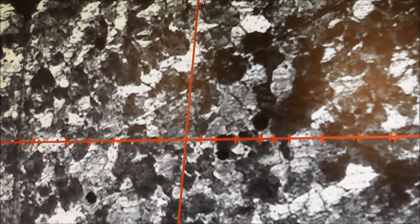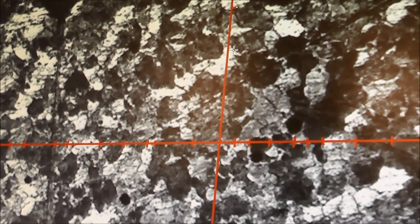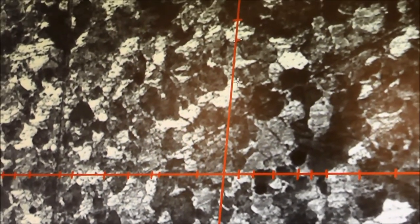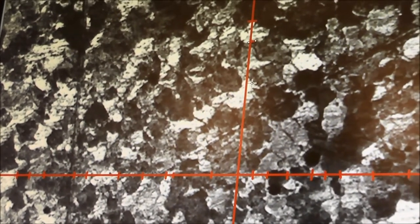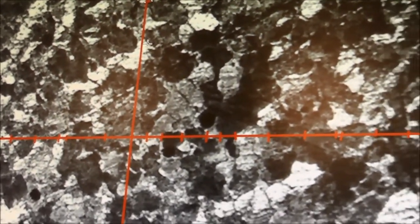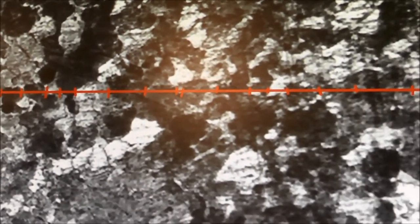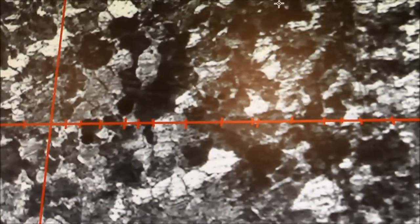So grain boundaries are wherever you cross a grain that is white to gray or gray to black or white to black, right? And also, look at the geometry. Sometimes the geometry can tell you if you're crossing a grain, but there might not be a color change or shade change.